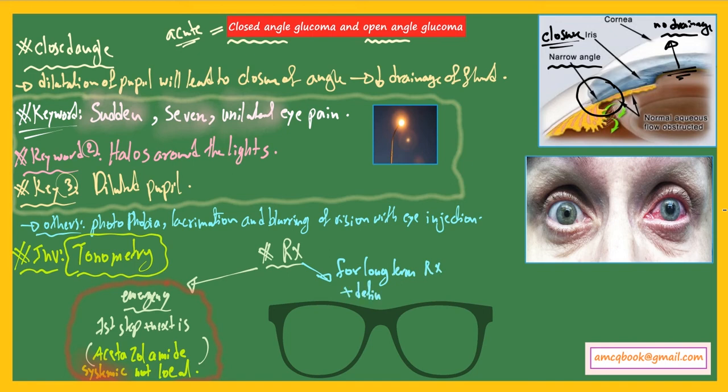For long-term treatment, also called definitive treatment, the procedure is iridotomy, which creates a drainage pathway for aqueous humor to decrease the pressure inside the anterior chamber of the eye.